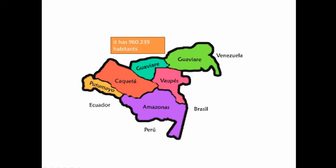The Amazon region includes the Departments of Amazonas, Caquetá, Guainía, Guaviare, Portumayo and Baupés.